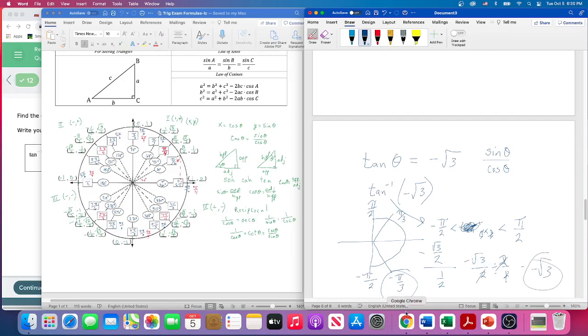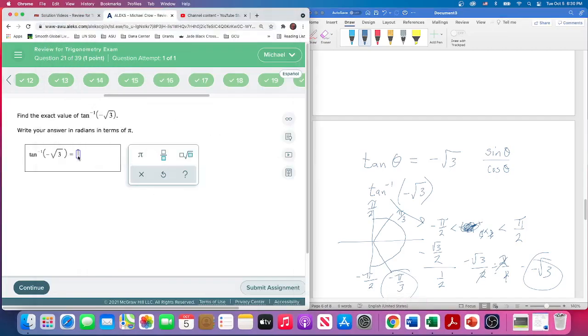We get negative square root of 3. That's how that works. This is the answer here, and that gives us our exact answer. We want to put in negative π/3. So that is question 21. Thanks!